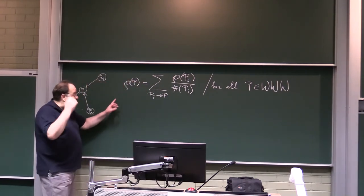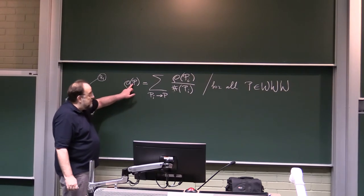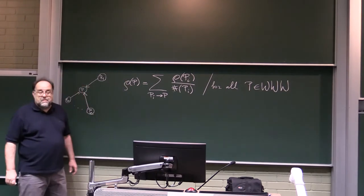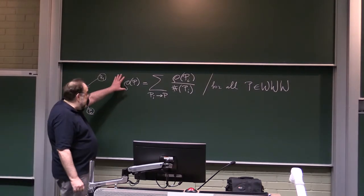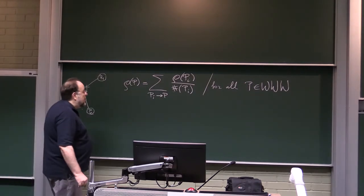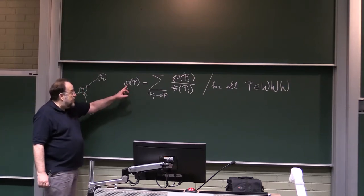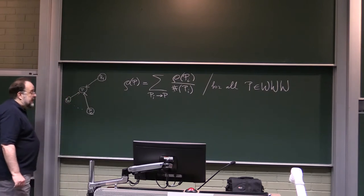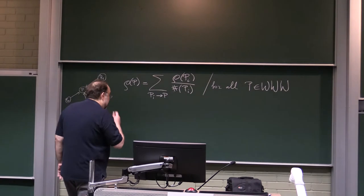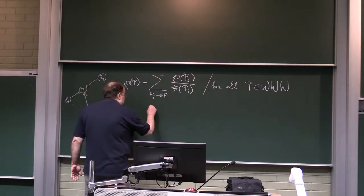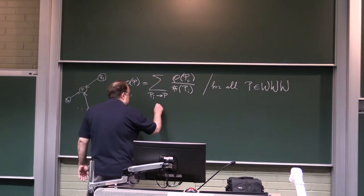This is not just one equation, but as many equations as you have web pages on the internet. This huge system of linear equations in terms of rows can be replaced by a single matrix equation. So we introduce matrix G.